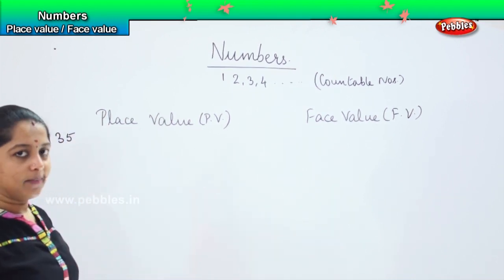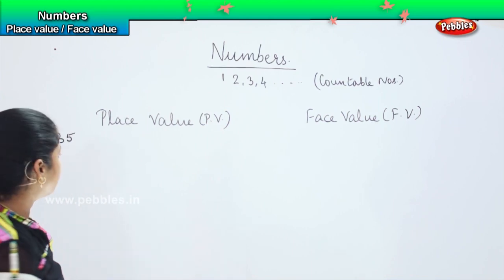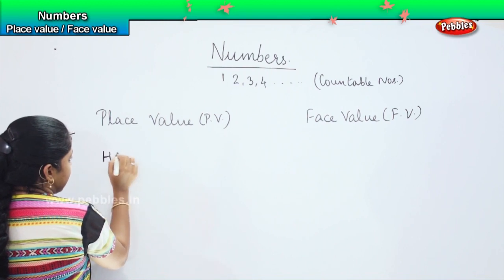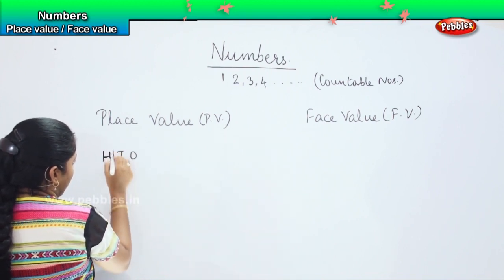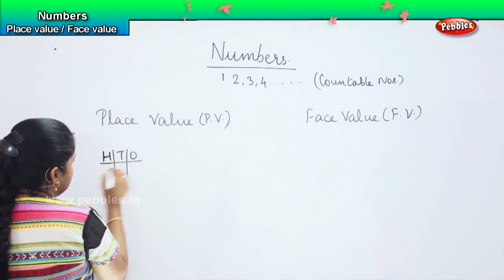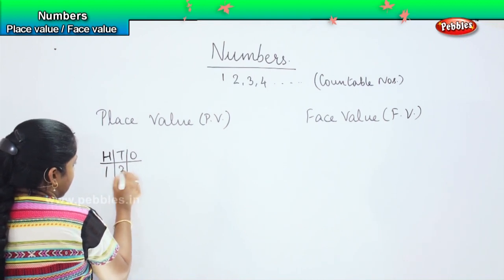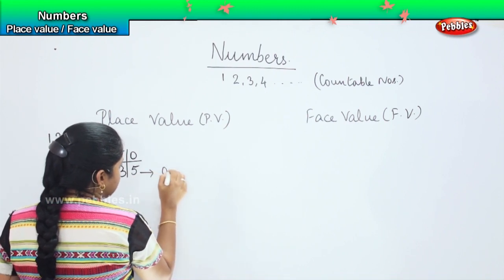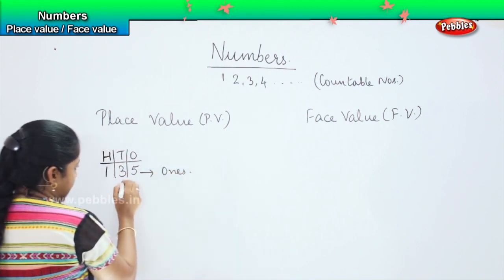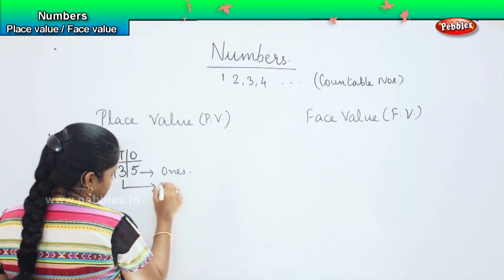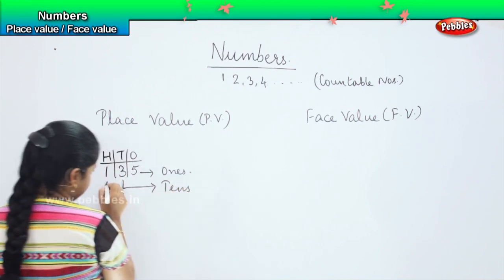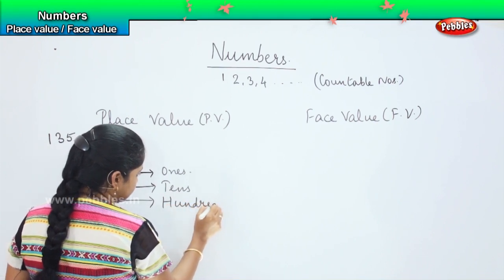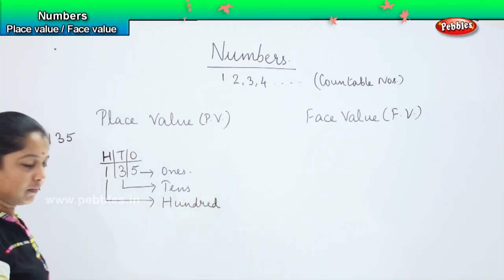So, can you tell me the place value of 135? First step will be, I will be writing it as H-T-O. And then I will split and write 135. So, my 5 will be in the ones place, my 3 will be in the tens place, and my 1 will be in the hundreds place.